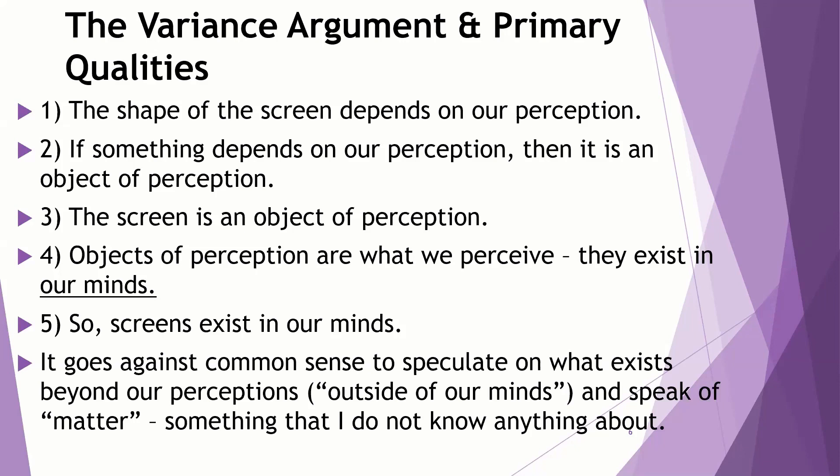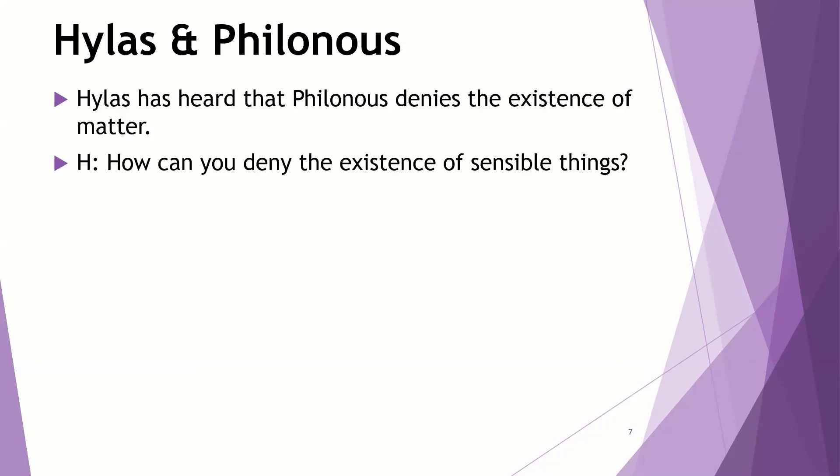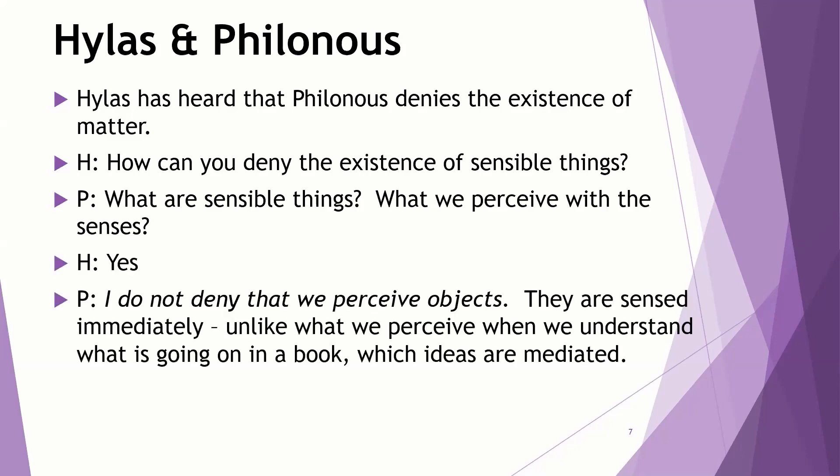And so Berkeley is presenting his ideas in a dialogue. In his dialogue, we have a couple people conversing. Hylus is actually from the Greek word for matter. And Philonus, the nous part of that is for mind. Of course, philo means love. So we have the person defending matter and Philonus defending Berkeley's view. And Hylus has heard that Philonus denies the existence of matter. So he's concerned about Philonus. And Hylus thinks Philonus has gone crazy. So he comes and he asks him, how can you deny the existence of sensible things? And Philonus says, what are you talking about? What are sensible things? Those are things we perceive with the senses, correct? And Hylus agrees with that question. Yes, certainly.